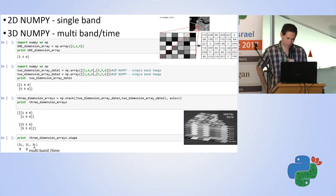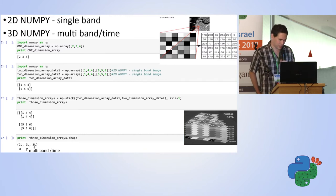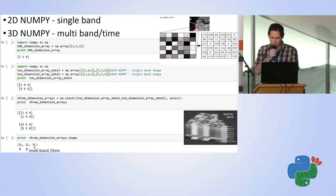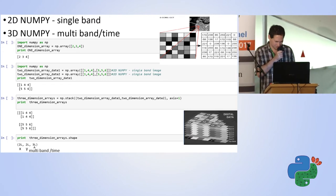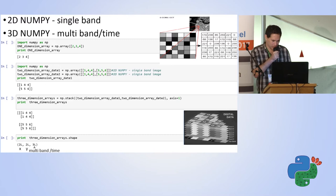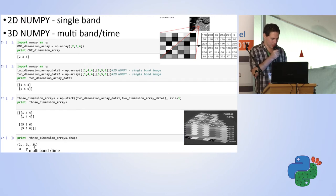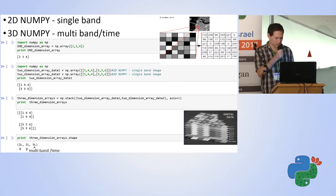When working with satellite data in Python, we work with NumPy. A 2D NumPy array represents a single band. We start with a 1D array, then move to a 2D array. If we stack multiple 2D arrays together we get a multi-band array. We can also create a time array, meaning raster on top of raster where each raster is from a different date.